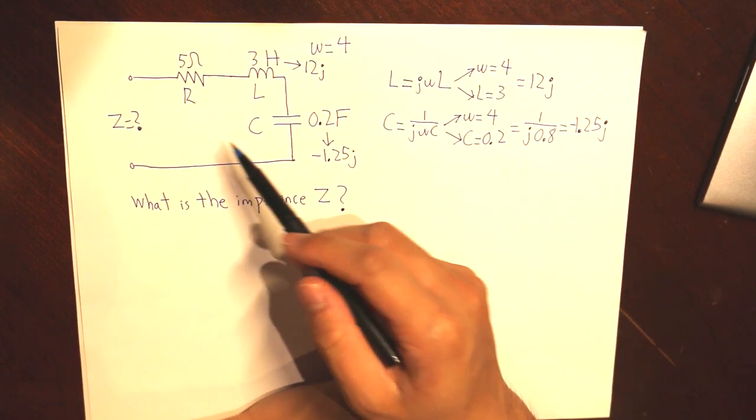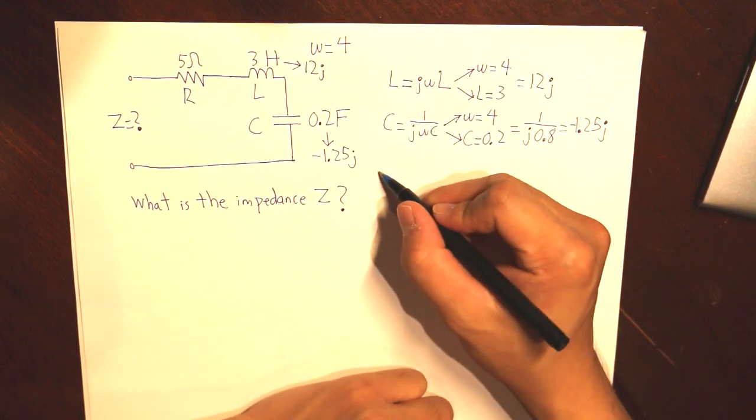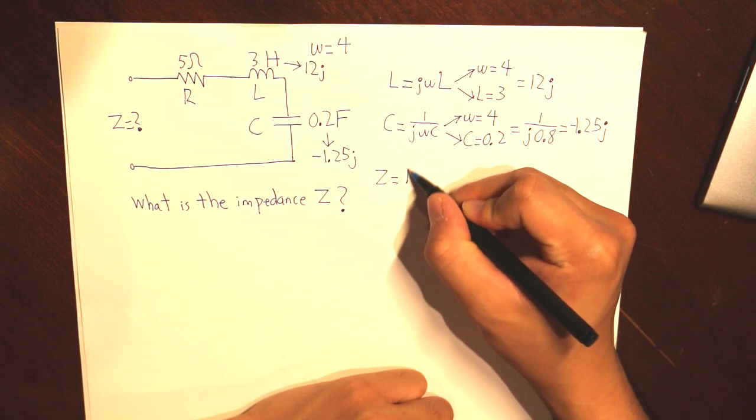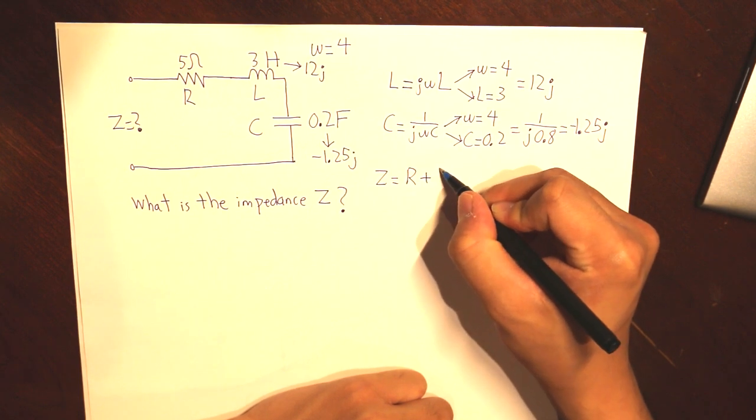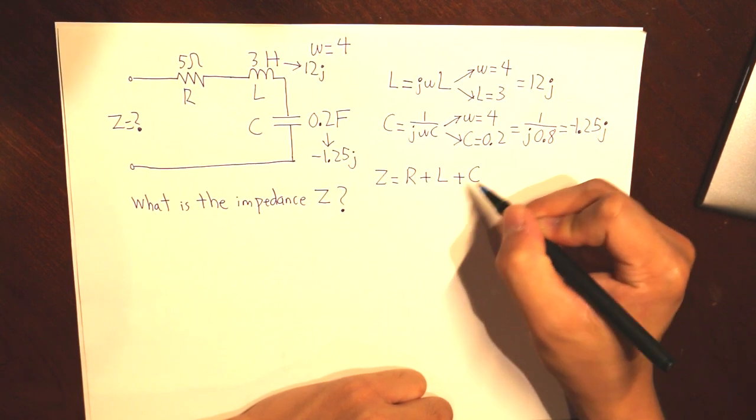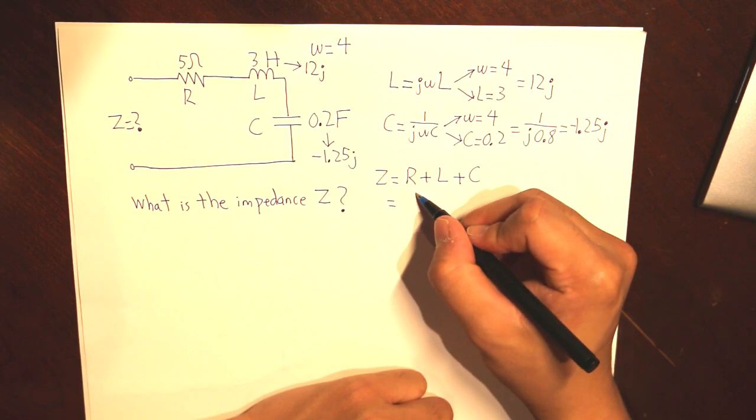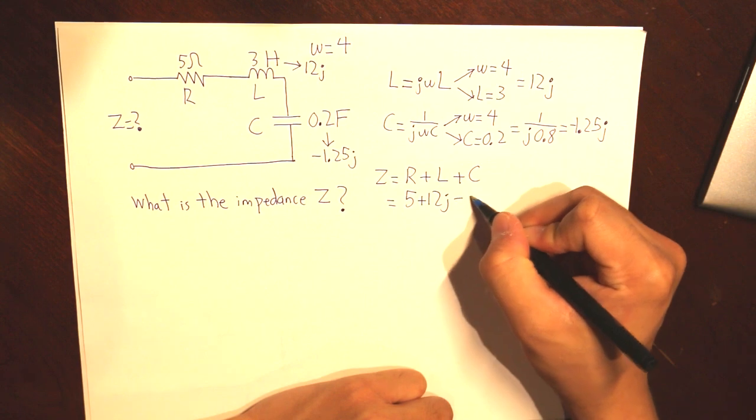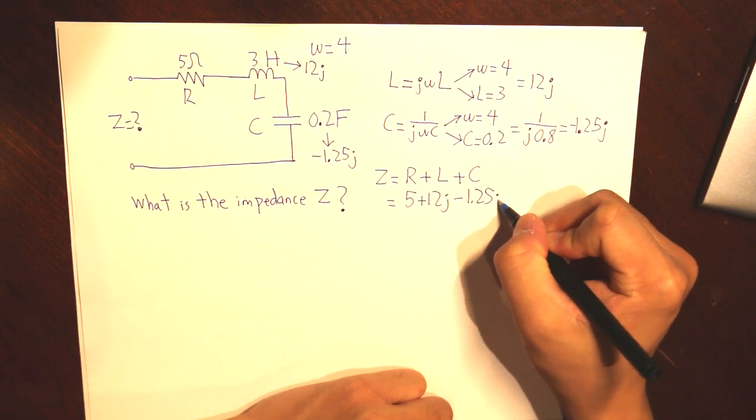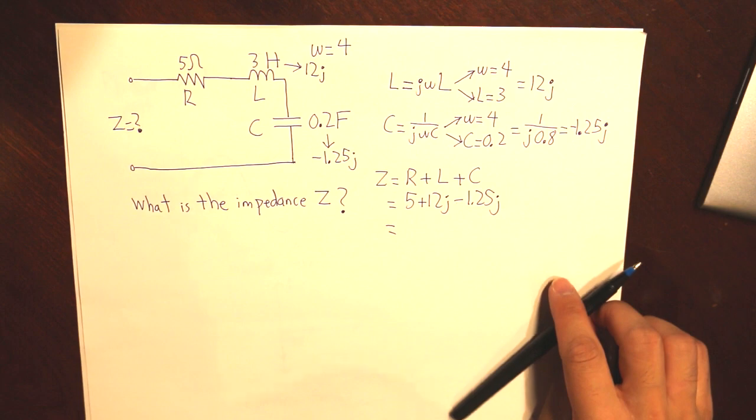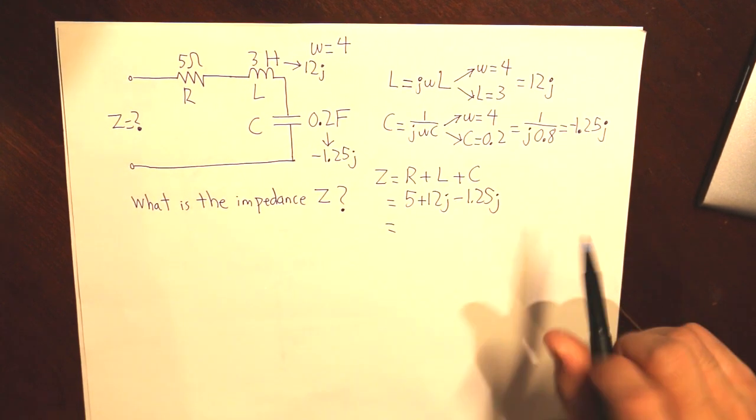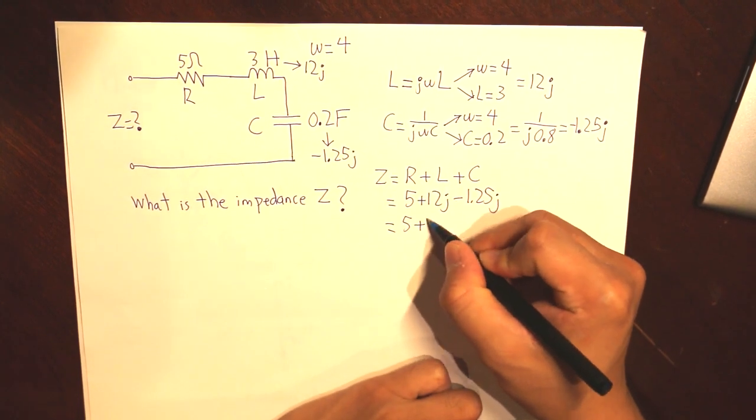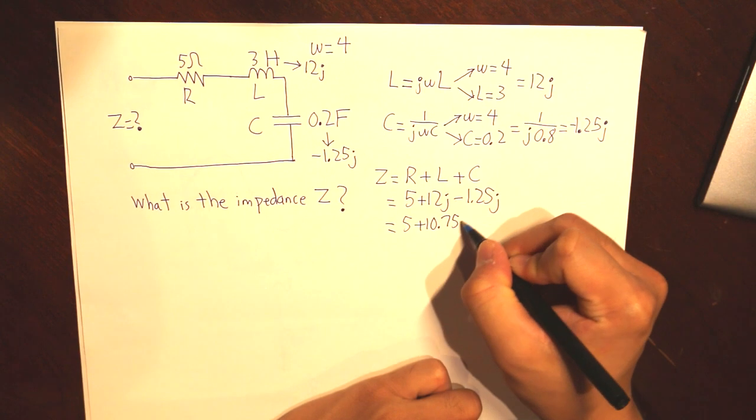We can calculate what our impedance is. So the three values are the resistor plus the inductance plus the capacitance. And those values are 5 plus 12J minus 1.25J. And in the end, our impedance is 5 plus 10.75J.